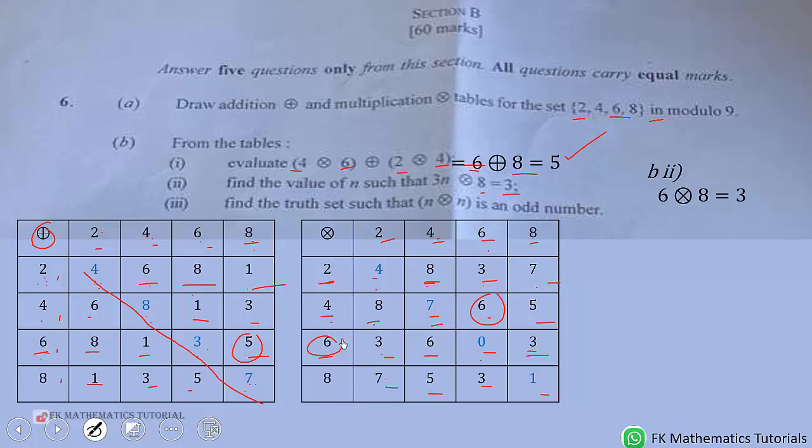So 6⊗8 is giving us 3. Now we compare this side to this side. It means 3N equals 6. Dividing through by 3, N will be 2.